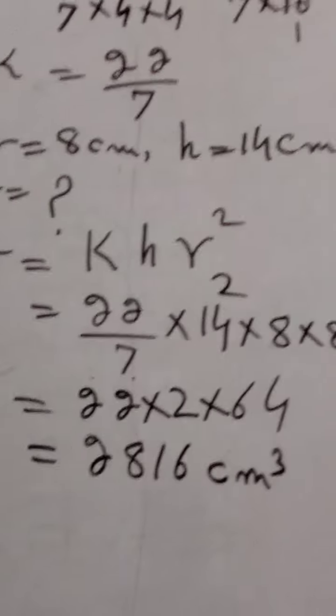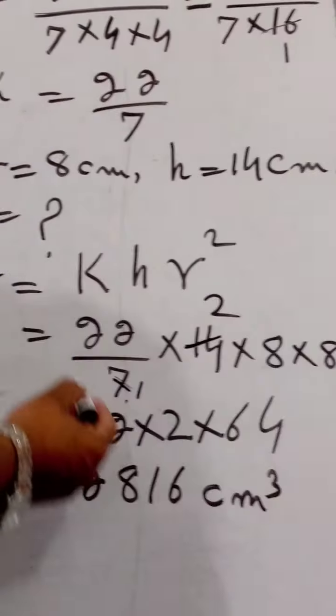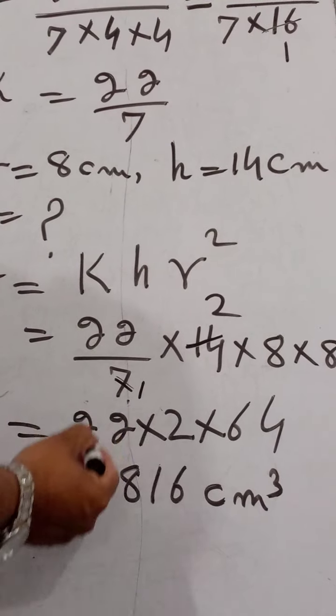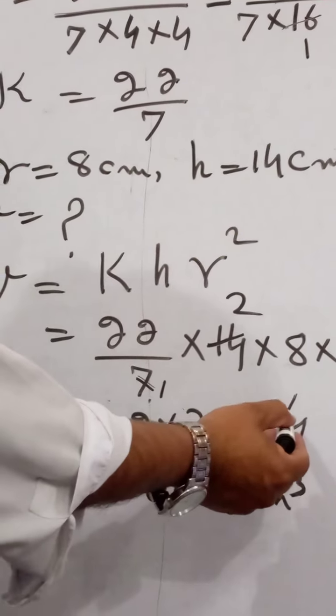By simplification, 7, 1s are 7, 2s are 14. From this, it is equal to 22 into 2 into 64.